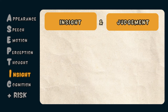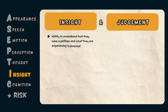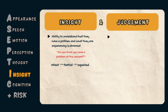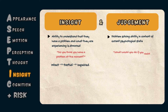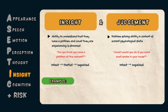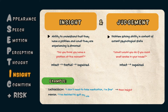The I in ASEPTIC refers to Insight and Judgment. Insight refers to the patient's ability to understand their own condition, assessed by asking 'Do you think you have a problem at the moment?' Insight can be described as intact, partially present, or impaired. Judgment refers to the patient's ability to make decisions in their current psychological state. For example, a patient with depression who says 'I don't need medication, I'm fine' demonstrates poor insight. A patient with mania who suddenly quits their job and spends all their savings on a new business venture demonstrates poor judgment.